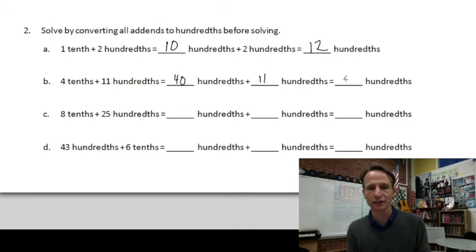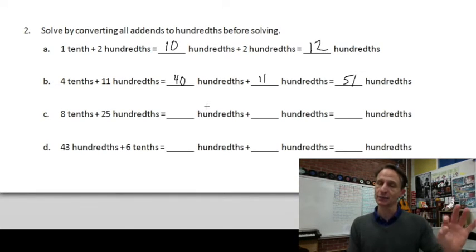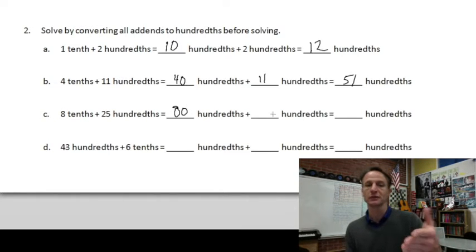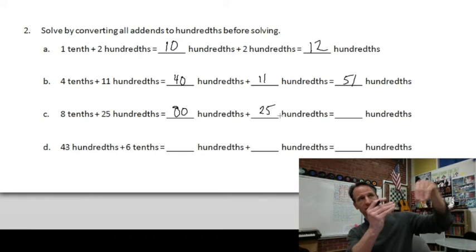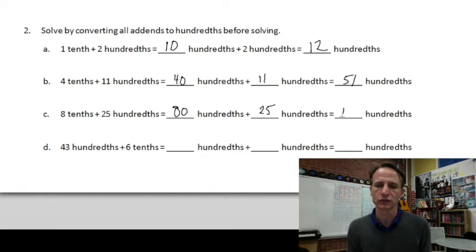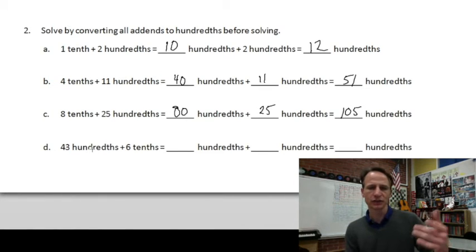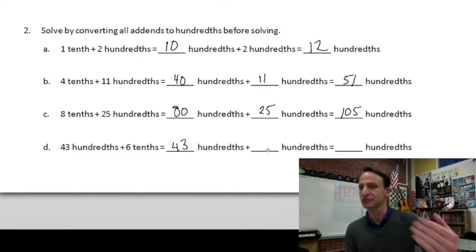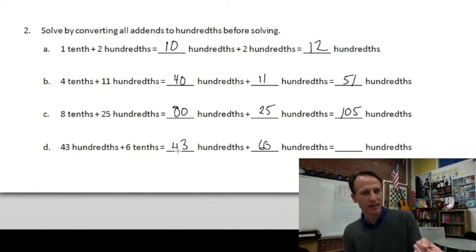Eight tenths is eighty hundredths — eight dimes is eighty cents. Twenty-five hundredths is already in hundredths. That twenty from the twenty-five makes a nice juicy one hundred hundredths, which is one whole, and then five more: one hundred five hundredths. Similarly, forty-three hundredths plus six tenths: six tenths is sixty hundredths, and forty and sixty make one hundred, with three more — one hundred three hundredths.